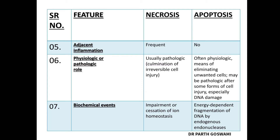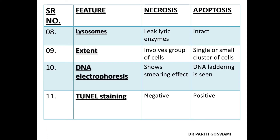As far as biochemical events are concerned, in necrosis you will have impairment or cessation of ion homeostasis. In apoptosis, the main biochemical event is caspase activation, leading to energy-dependent programmed cell death. Subsequently, endonuclease activation causes fragmentation of DNA into nucleosome-size fragments.